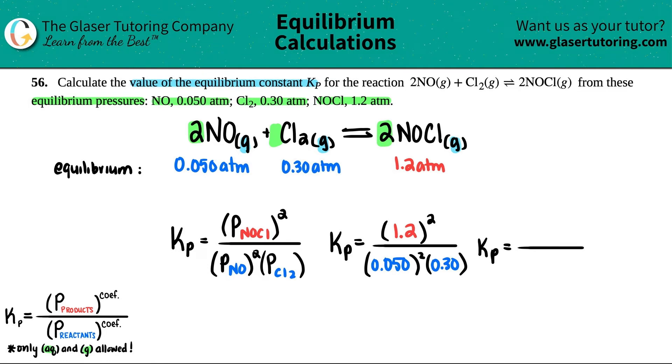So let's see, what do we get? 1.2 squared. I get 1.44. Beautiful. 0.05 squared, times 0.3, is 7.5 times 10 to the negative 4th. And now we're just ready to find that value. Kp equals 1.44 divided by the 7.5. And I got a big number. 1,920.